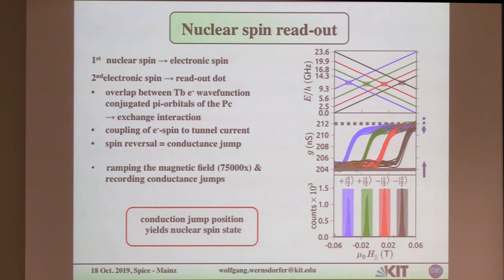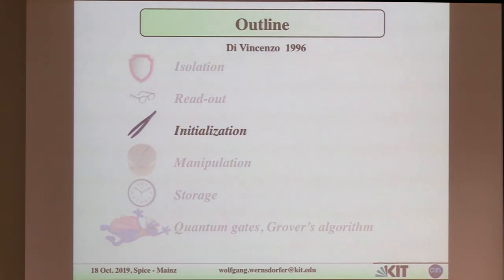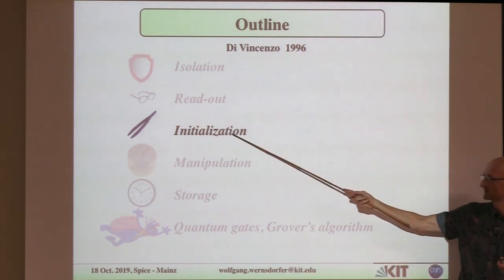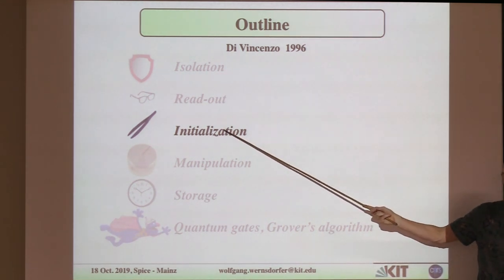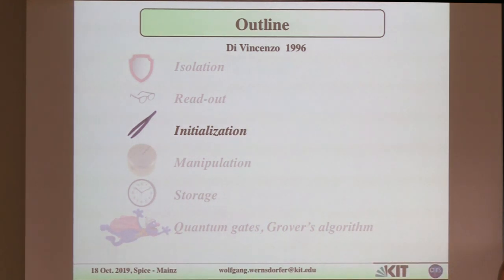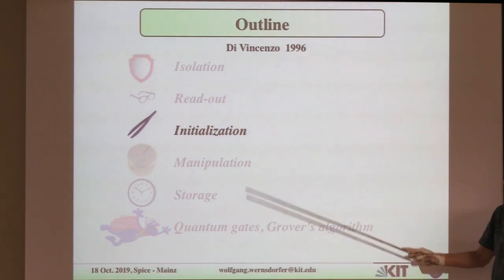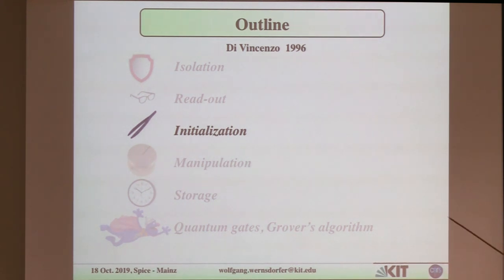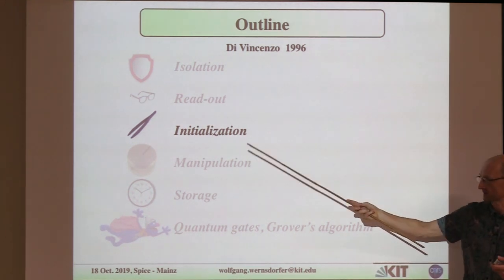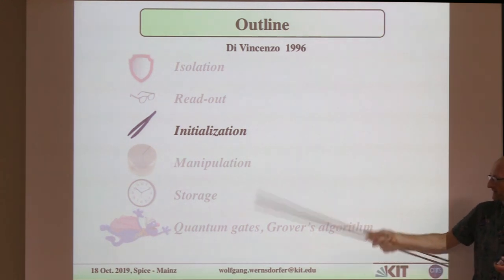Now we want to make quantum operations. The first step is always to initialize your system — put it in a controlled state. In an assembly of qubits this is a problem; nuclear spin quantum computing on assemblies is limited because you have trouble initializing all nuclear spins in one state. But in our case with one system, it's trivial. When I measure a quantum system, it's always projected to a certain fixed state — I simply measure my quantum system and then I know where it is.